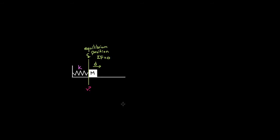We can figure out that speed using conservation of energy, and it's not that hard. The potential energy the spring starts with is one-half k — the spring constant — times d squared, where d is the amount the spring has been stretched. There's no kinetic energy to start because we released the mass from rest. As the mass flies to the left, spring energy starts turning into kinetic energy, and when the mass reaches the equilibrium position, d equals zero, so there's no spring energy left.